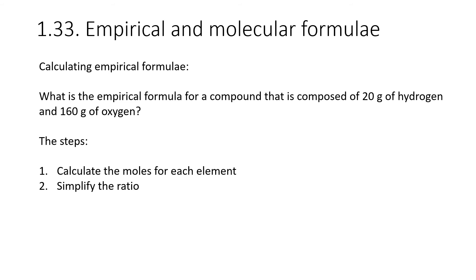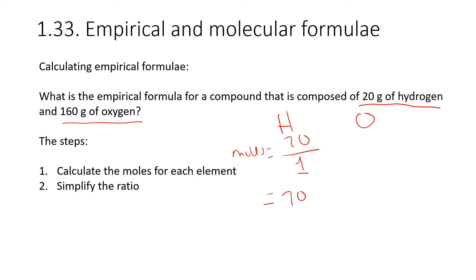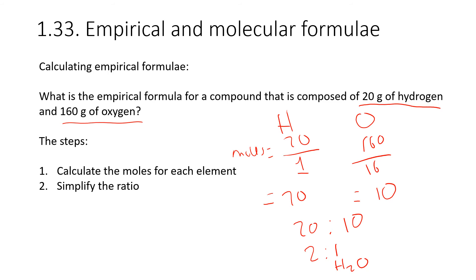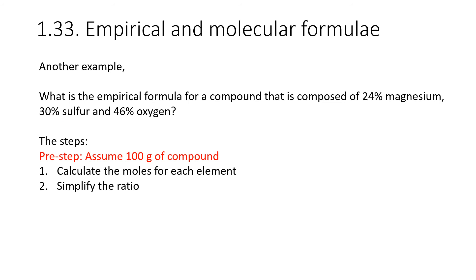Let's find the empirical formula for a compound made of 20 g of hydrogen and 160 g of oxygen. Moles of hydrogen = 20 ÷ 1 = 20. Moles of oxygen = 160 ÷ 16 = 10. The mole ratio is 20:10, which simplifies to 2:1, giving an empirical formula of H₂O.